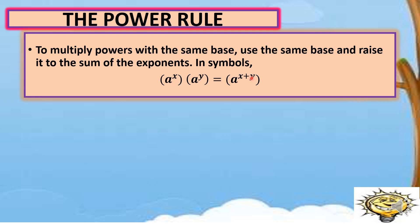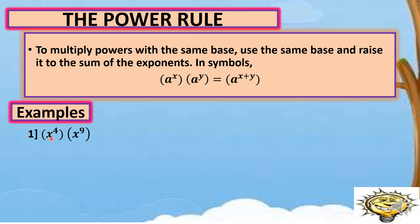Let's have some examples. Number one, what is the product of x raised to 4 times x raised to 9? As you can see, they have the same base, which is letter x. So we just copy x, and then we add the exponents. So we have x raised to 4 plus 9, and the sum is equal to 13. So our answer is x raised to 13.